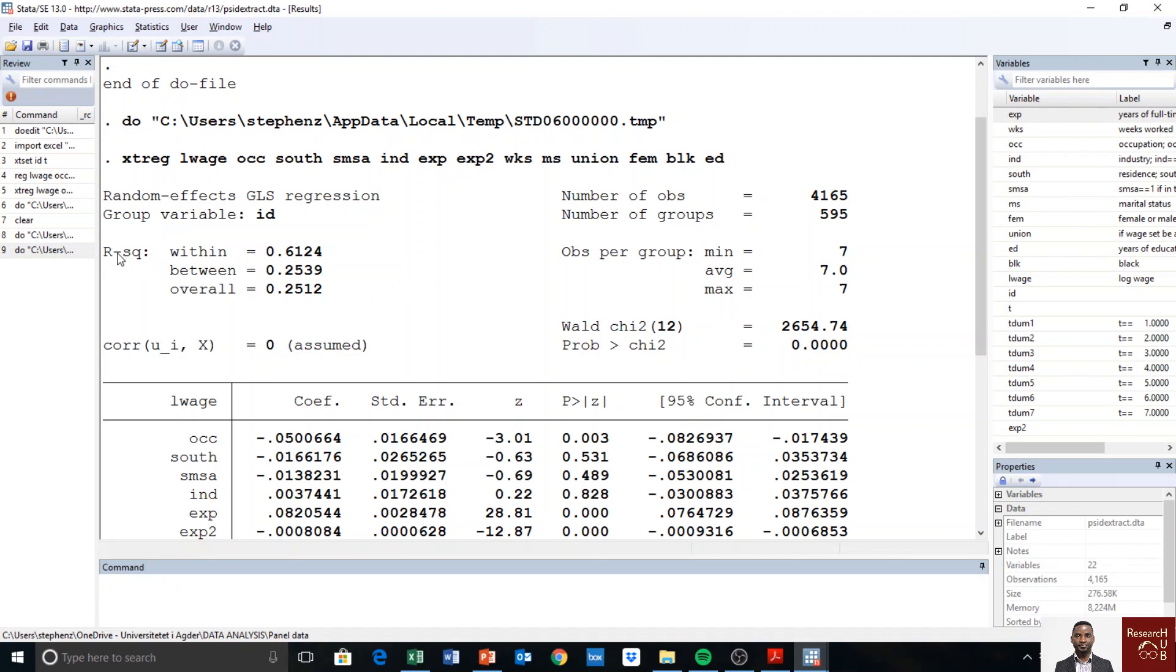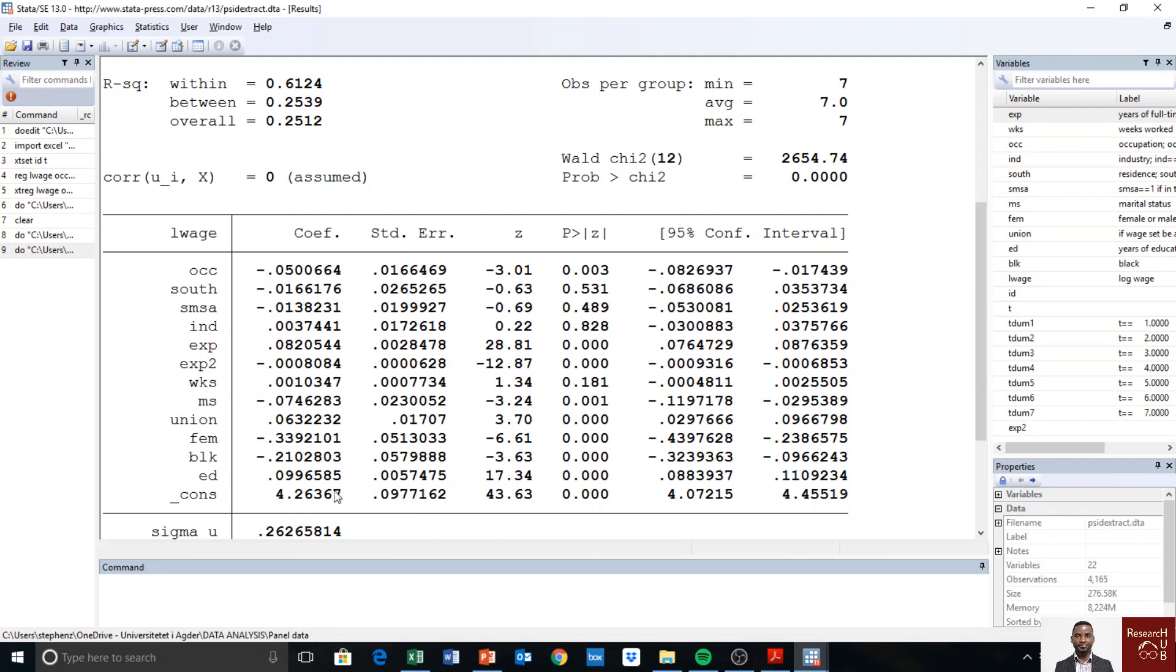Then to the left we have the R square, there are three of them so we have the within R square, between R square, overall. As I mentioned random effect uses both within and between information so therefore we are interested in the average overall R square which is this one 0.25. And the assumption of the random effect is given here as we can see, that is the correlation between the fixed effect which is the ui and the explanatory variable depicted by x is zero. So this is the main assumption of the random effects model and here we have the coefficients of all the variables and the standard errors and then the p values which we use to check whether the variable is significant or not.